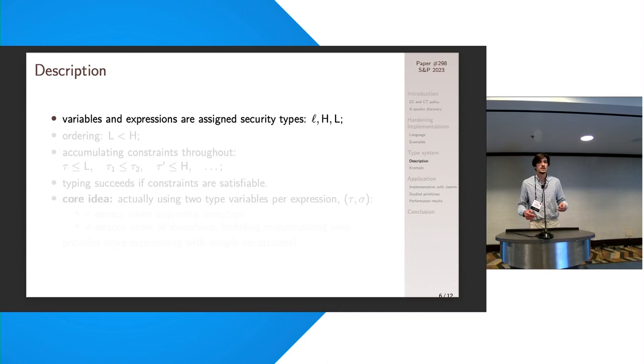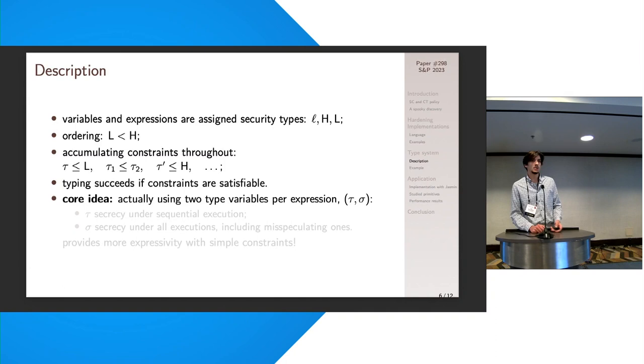And so one good idea to actually allow ourselves to have some form of expressivity while typing the program is by means of using ordering. So this is purely arbitrary, but let's say that public is smaller than secret. And now this allows us to express a few things using those inequalities. So the first one would mean that the type tau is public because nothing is smaller than public. The second would mean that the value corresponding to tau 2 is more secret than the value corresponding to tau 1. And the third one, well, there's a typo, it should be reversed, but if it's H smaller than tau prime, then it means that tau prime is secret. And so this actually gives us quite a good amount of expressivity in the type system.